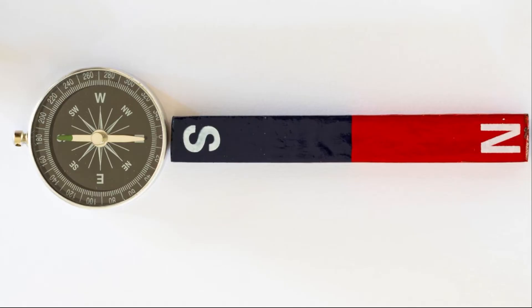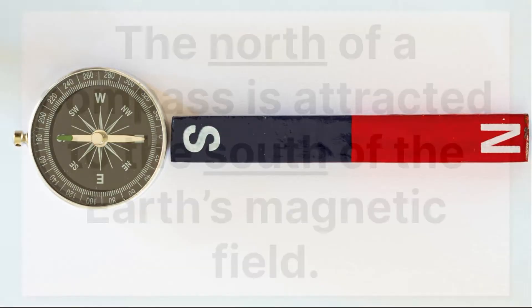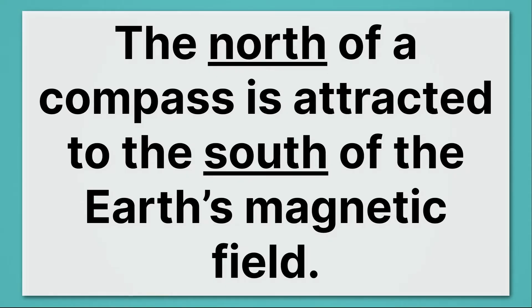Here we have a compass on the left and a magnet on the right. Notice that the needle of the compass is pointed directly towards the south pole of our magnet. And that's the way it works on the surface of the Earth as well. It points towards what we call geographic north, which is actually the magnetic south pole on the Earth's magnetic field. So the north of a compass is attracted to the south of the Earth's magnetic field.